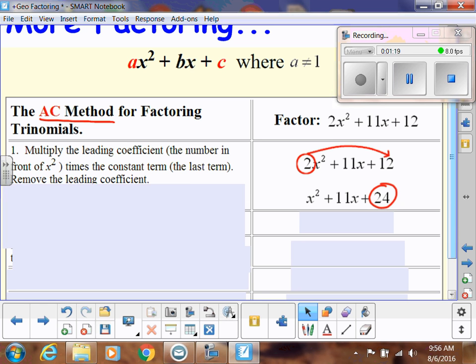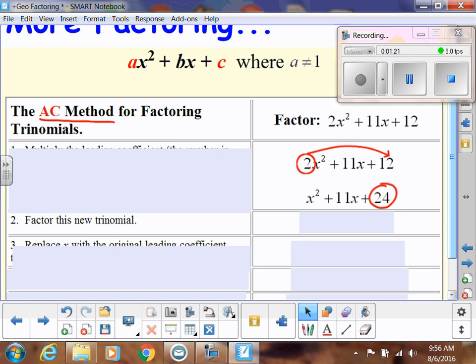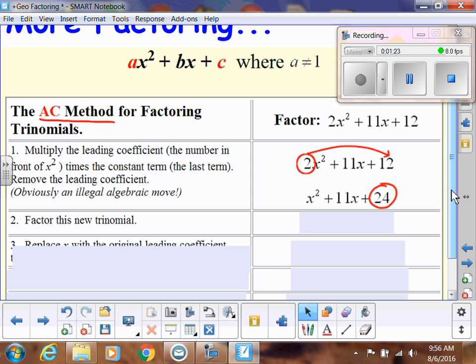Second step: factor this new trinomial. This is going to be pretty easy because now we have a leading coefficient of just 1, so we're down to the basic. That would be (x + 8)(x + 3).